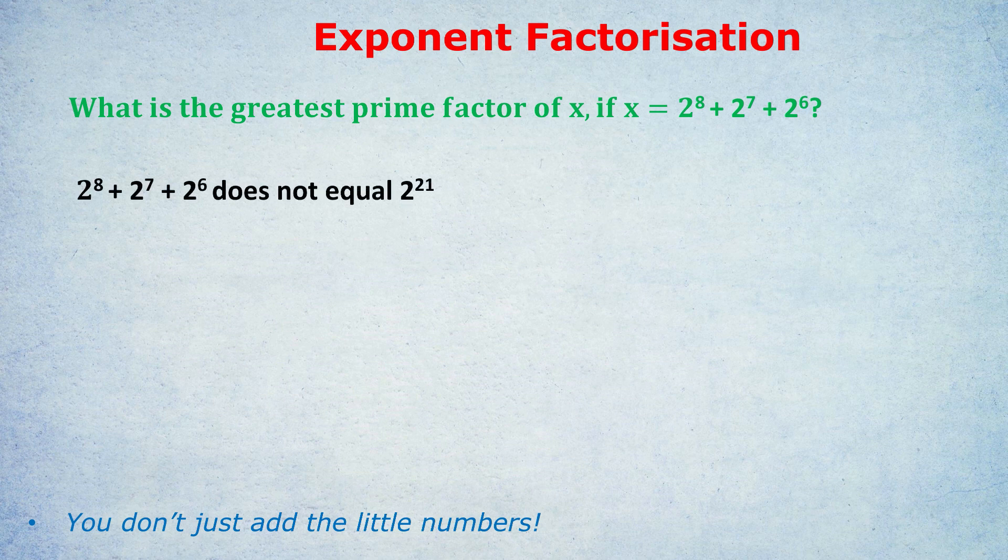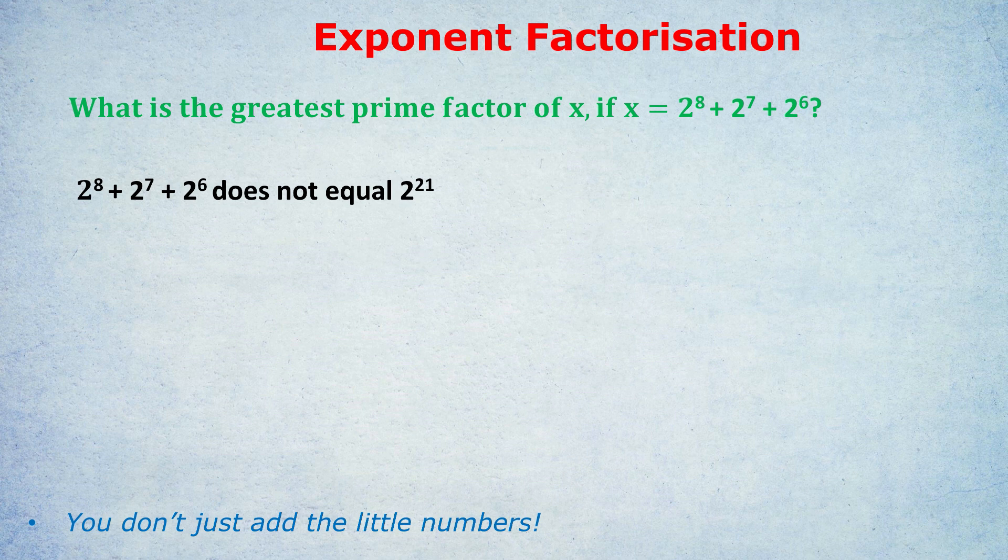Many students would have gone, ah, I can outsmart Philip, I'm just going to add the little numbers and get 2 to the power of 21. But it doesn't work like that. When you add together numbers with exponents, you can't simply add the little numbers.